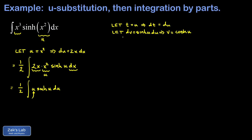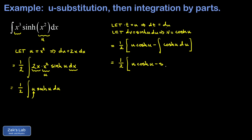The integration by parts formula says we take the product of t and v — and don't forget the one half out in front of the entire integral. So we get one half times: t times v, which is u cosh u, minus the integral of v times dt, that's cosh u du. Since sinh and cosh are each other's derivatives and antiderivatives, the integral of cosh is just sinh. So inside the brackets we get u cosh u minus sinh u.